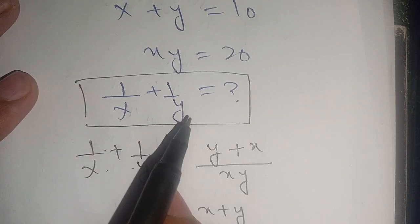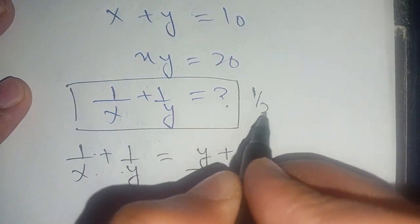Thus, the final answer is 1 divided by x plus 1 divided by y equals 1 divided by 2.